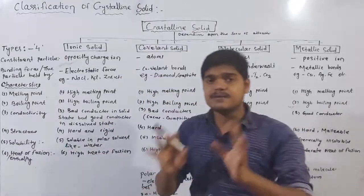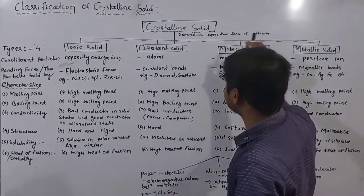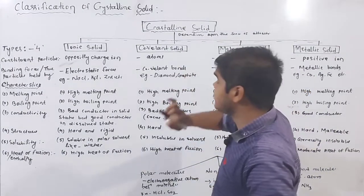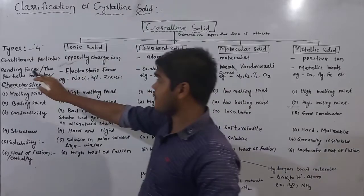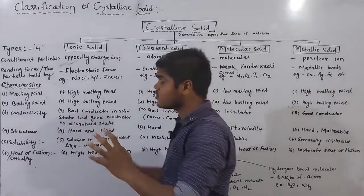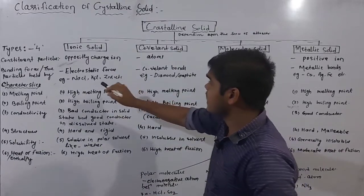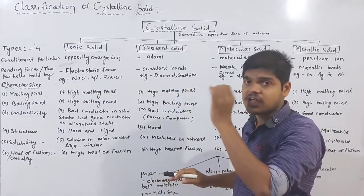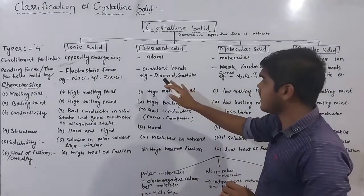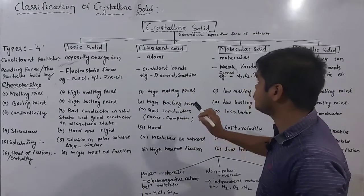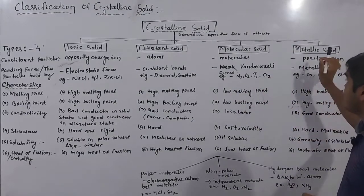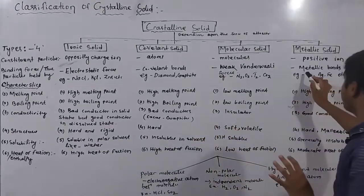Then we have binding force. The binding force is also different for each type. The ionic solid particle is held by electrostatic force. The covalent solid particle is held by covalent bonds. The molecular solid particle is held by weak van der Waals force, and the metallic solid particle is held by metallic bonds.